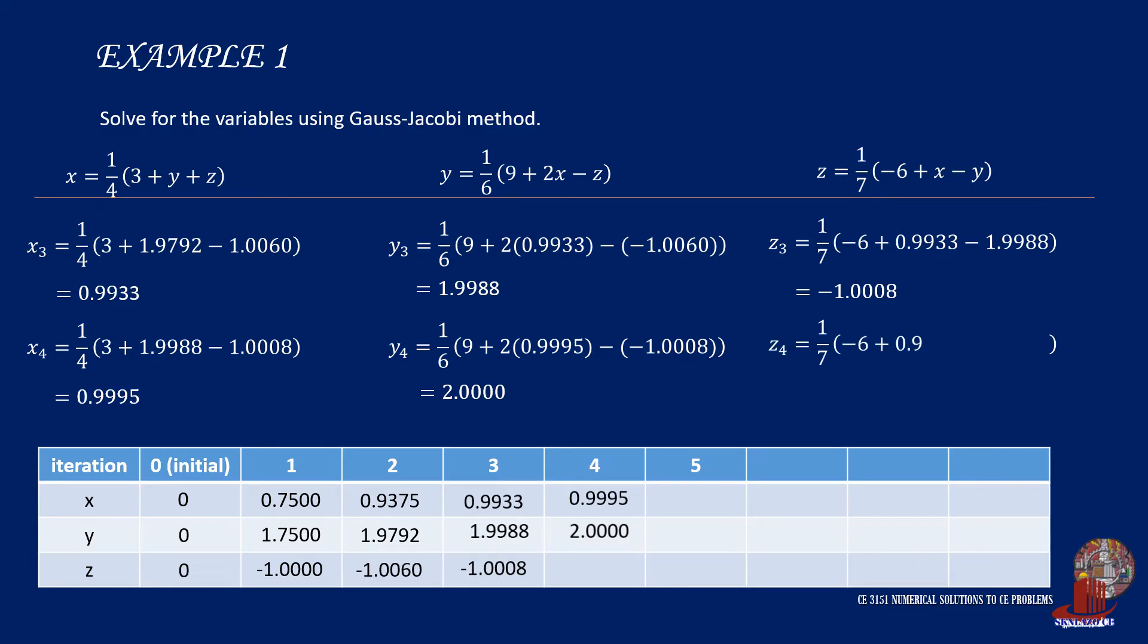z sub 4 is one over 7 times negative 6 plus 0.9995 minus 2, yielding negative 1.0001.